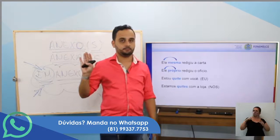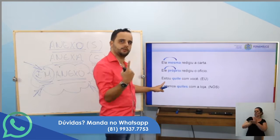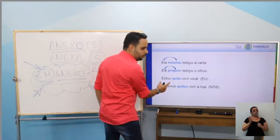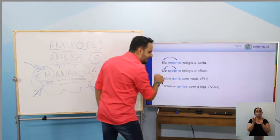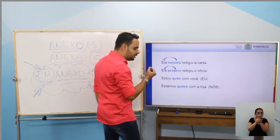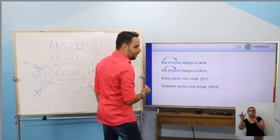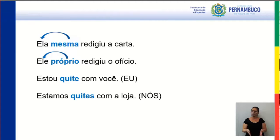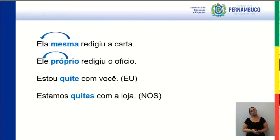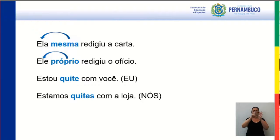Estou quitte com você — não te devo mais nada. 'Estou' é primeira pessoa do singular — o sujeito desinencial, oculto ou elíptico. Olha: estou quitte — eu estou, primeira pessoa do singular. Estamos quites com a loja — 'nós estamos quites', o sujeito oculto em primeira pessoa do plural.